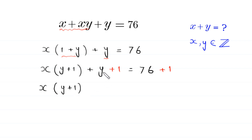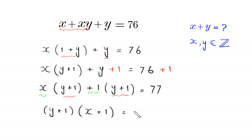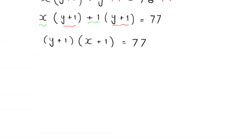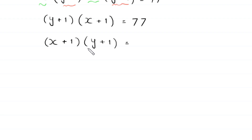From these two terms we can factor out (y plus 1) as a common factor, giving (y plus 1) times (x plus 1) equals 77. We then rewrite this as (x plus 1) times (y plus 1) equals 77.